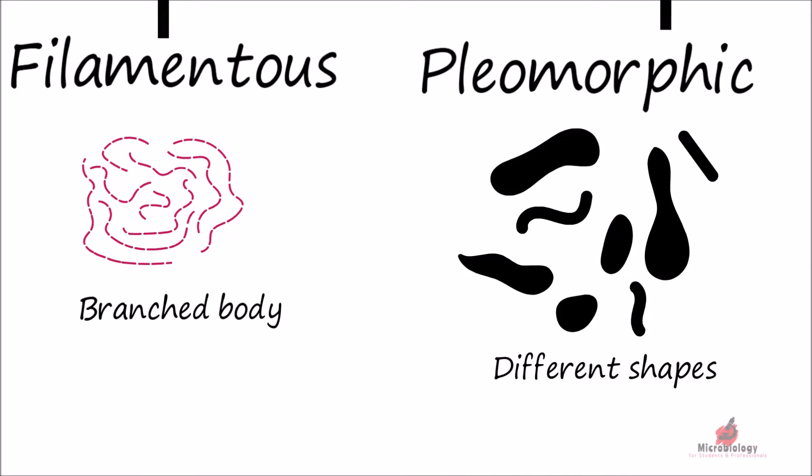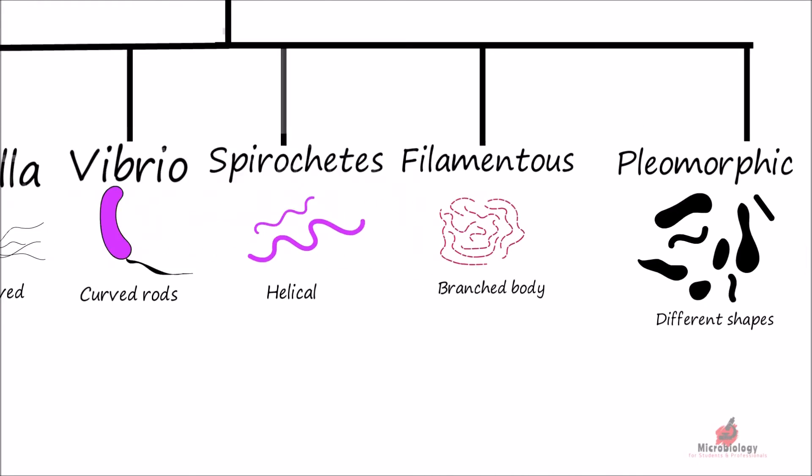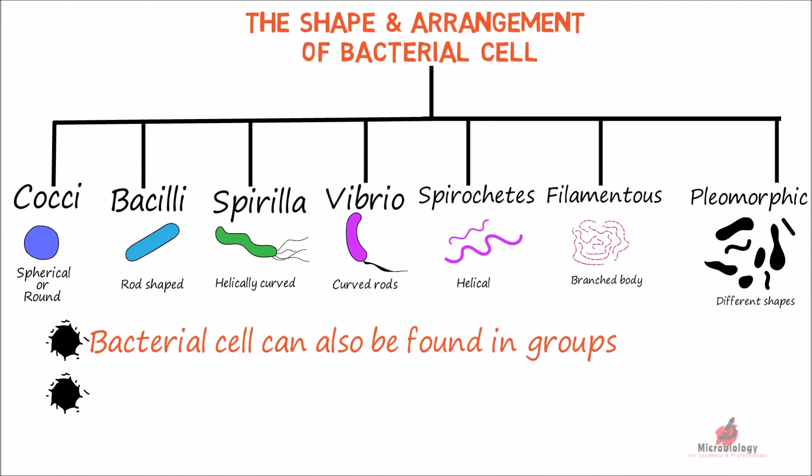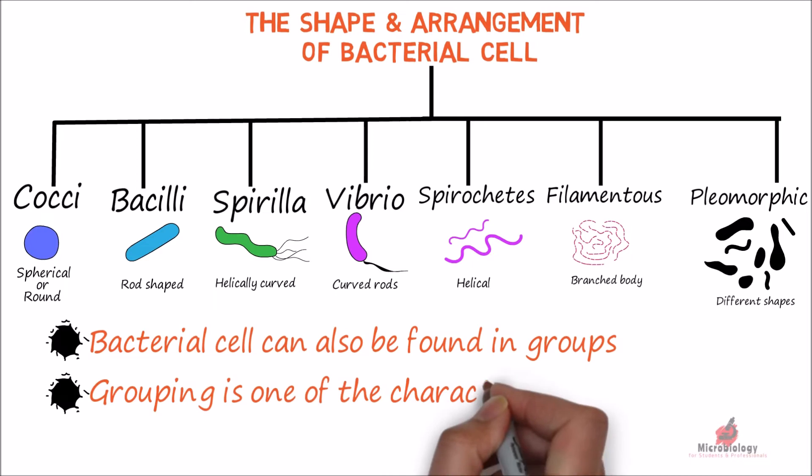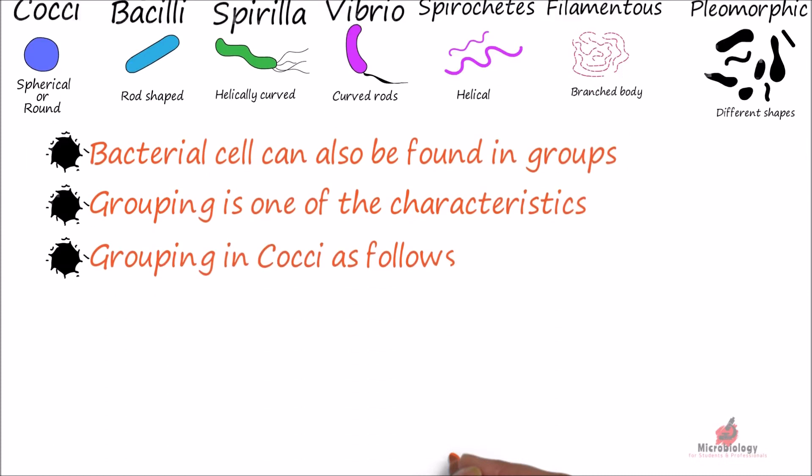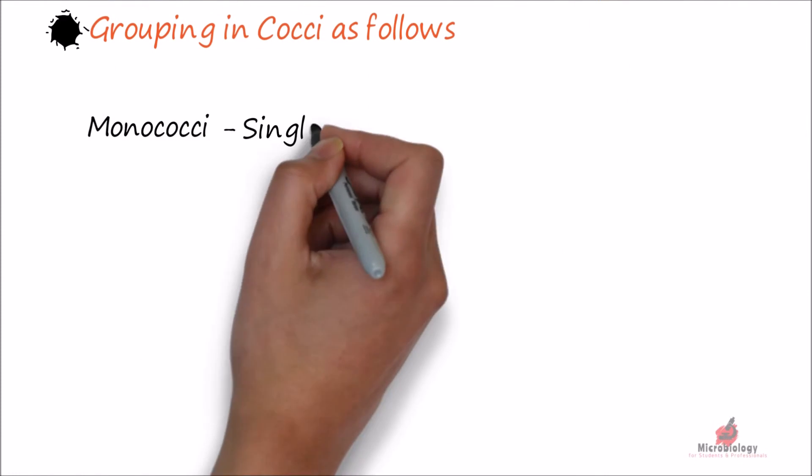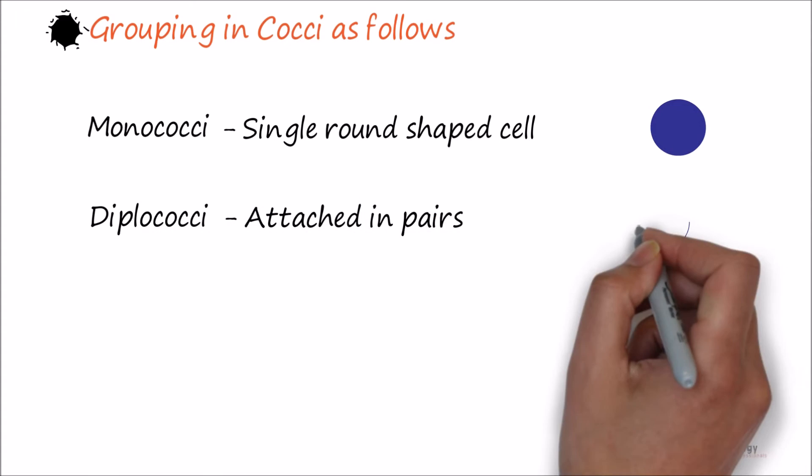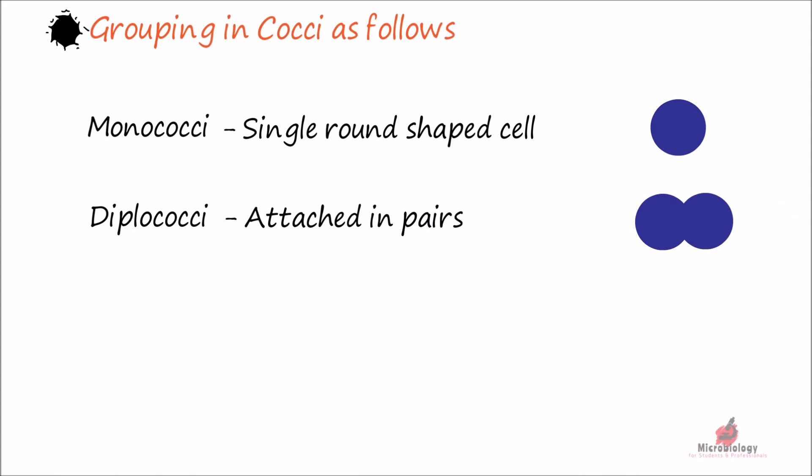As discussed earlier, the bacterial cell can also be found in groups. The grouping of cells becomes one of their characteristics. The most common arrangement of cells in cocci bacteria is as follows: monococci are single round shaped cells, diplococci divide in one plane and remain attached in pairs, streptococci divide in one plane and remain attached to form chains.